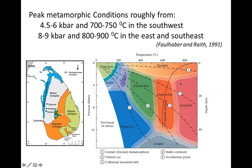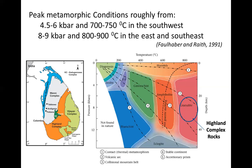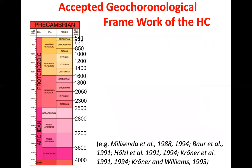So you can see the Highland Complex is variable in metamorphic grade from one region to another — but still entirely within granulite facies boundaries. Different parts of the Highland Complex show different pressure-temperature conditions, yet the entire Highland Complex can be considered a granulite facies crustal component.